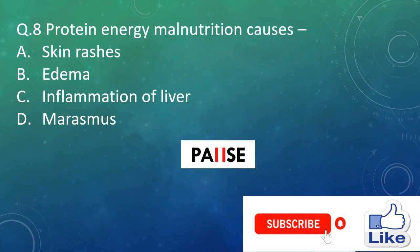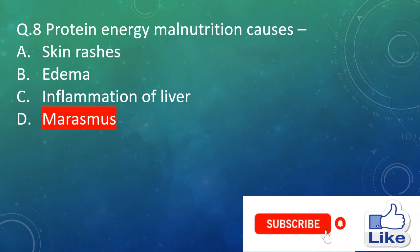Question 8. Protein energy malnutrition causes — option A: skin rashes, option B: edema, option C: inflammation of liver, and option D: marasmus. The right answer is option D, marasmus.